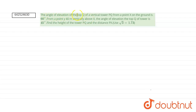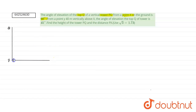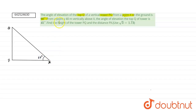The angle of elevation of the top Q of a vertical tower PQ from a point X on the ground is 60 degrees. We have a vertical tower with base P and top Q, and there is a point X on the ground. From point X, the angle of elevation to the top Q is 60 degrees. Next, from a point Y, 40 meters vertically above X, the angle of elevation of the top Q of the tower is 45 degrees.